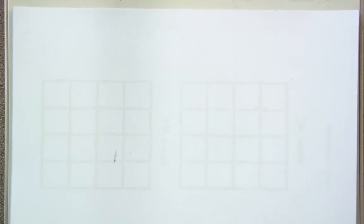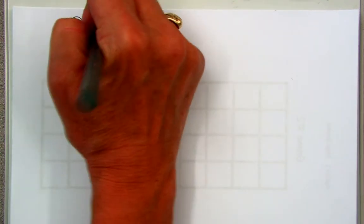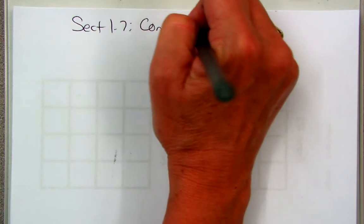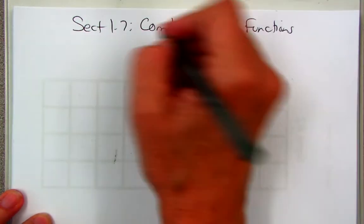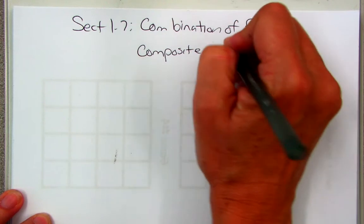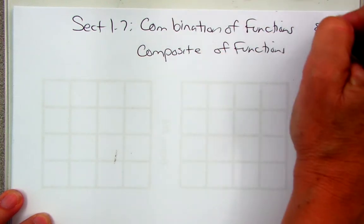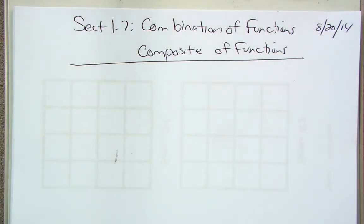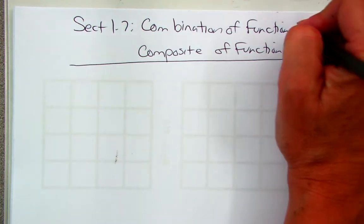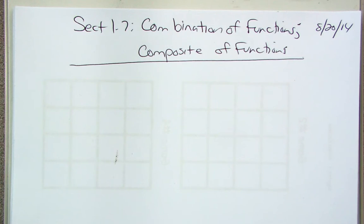We're not going to behave any differently. I'm still going to ask you, I'm still going to be obnoxious. It's all being recorded right now, but I don't have a problem with being obnoxious. Section 1.7, combination of functions — also composite functions. What I left you yesterday was combination, which is what you learned last year. You never learned composite in Algebra II Common Core, so that will be the new piece, but I'm not teaching that today. That will be tomorrow.